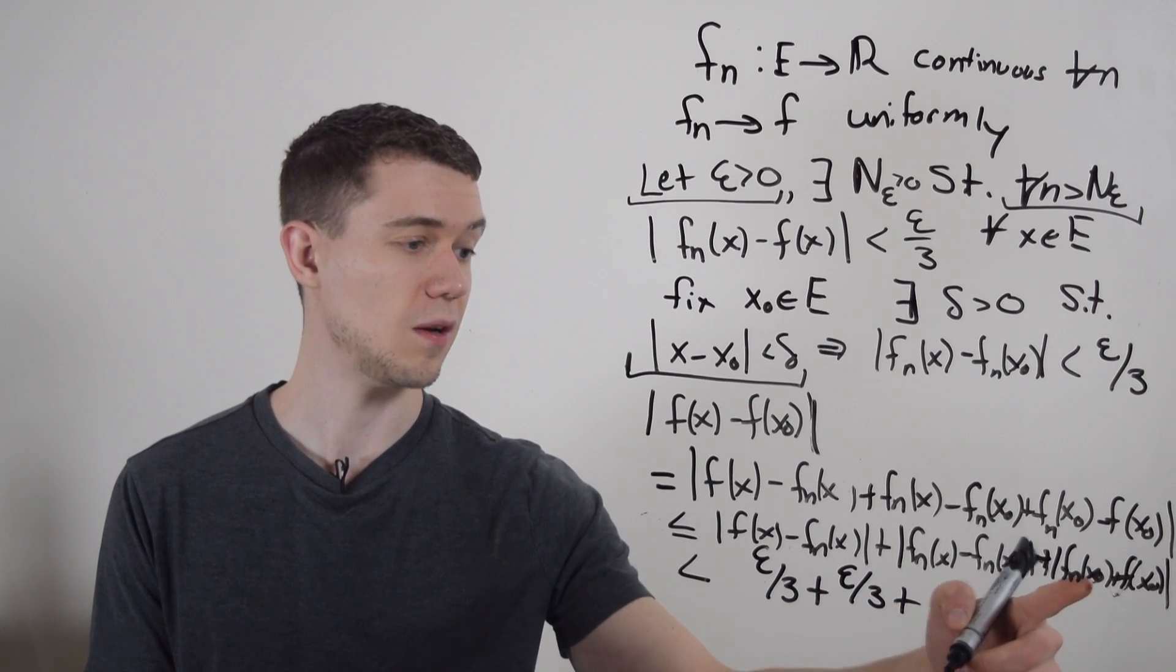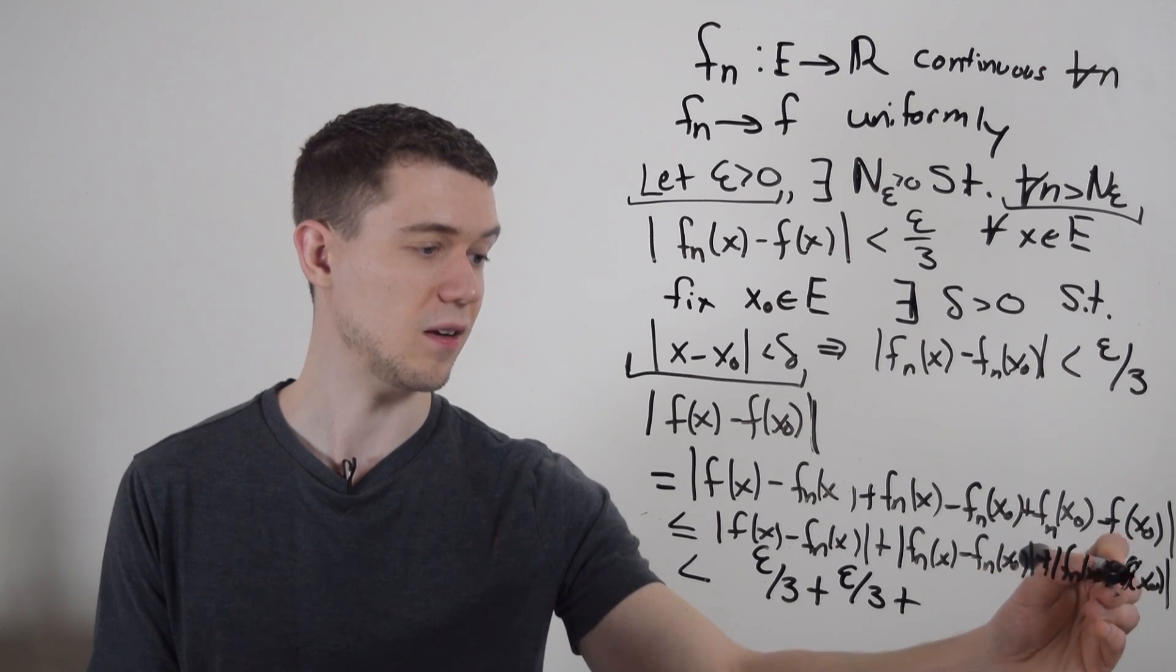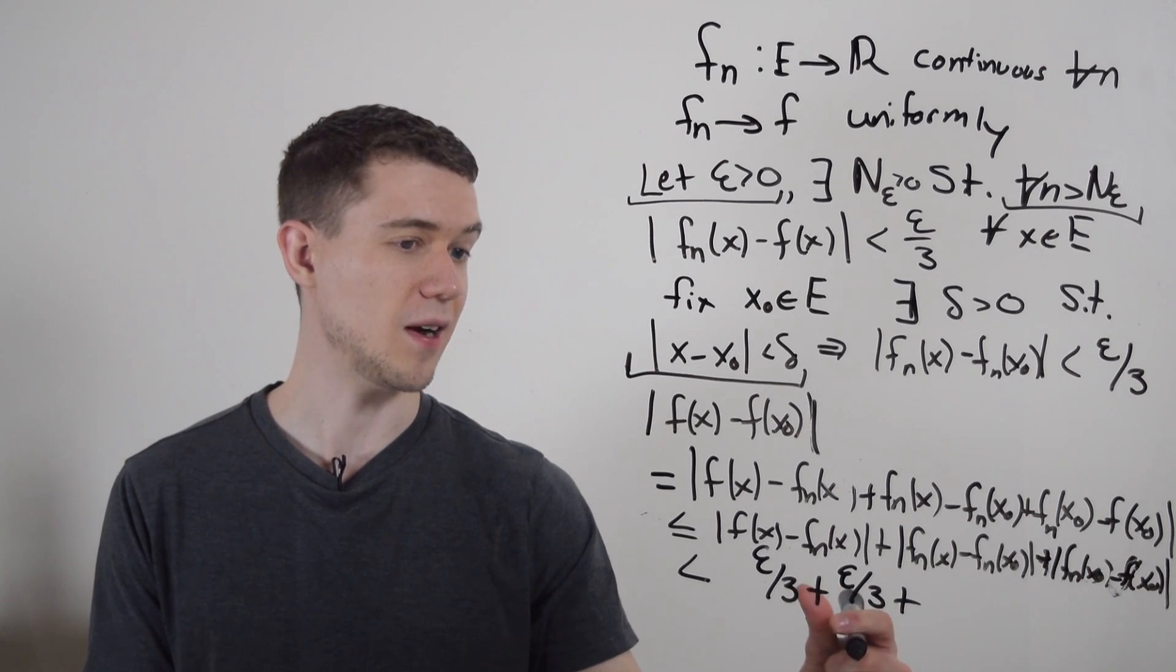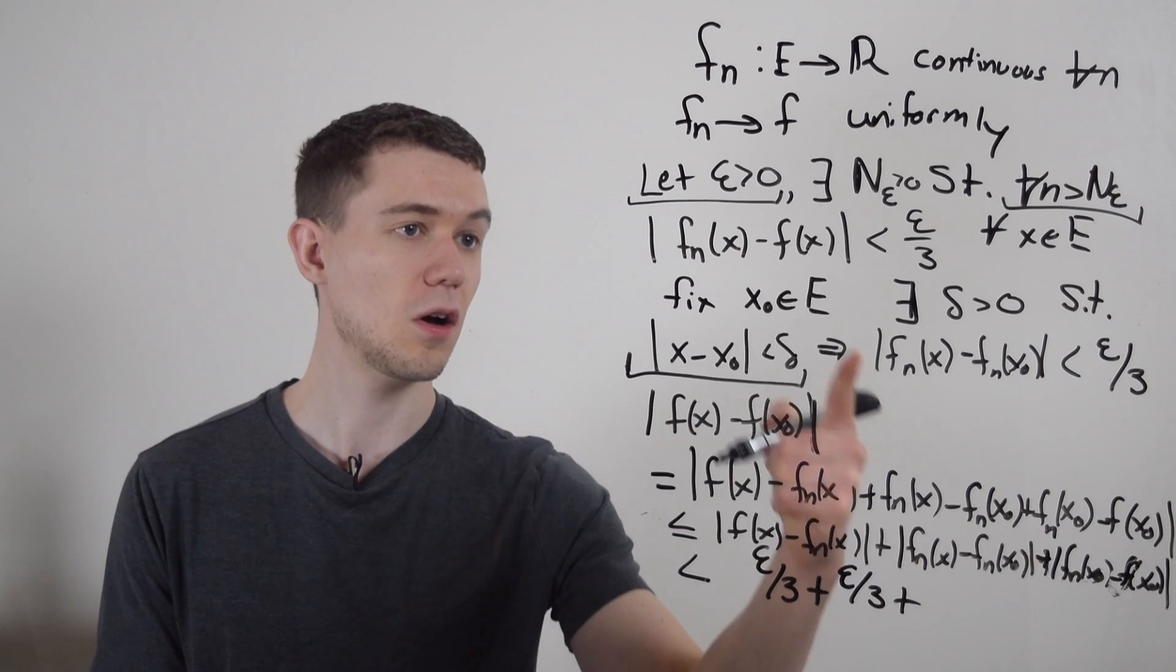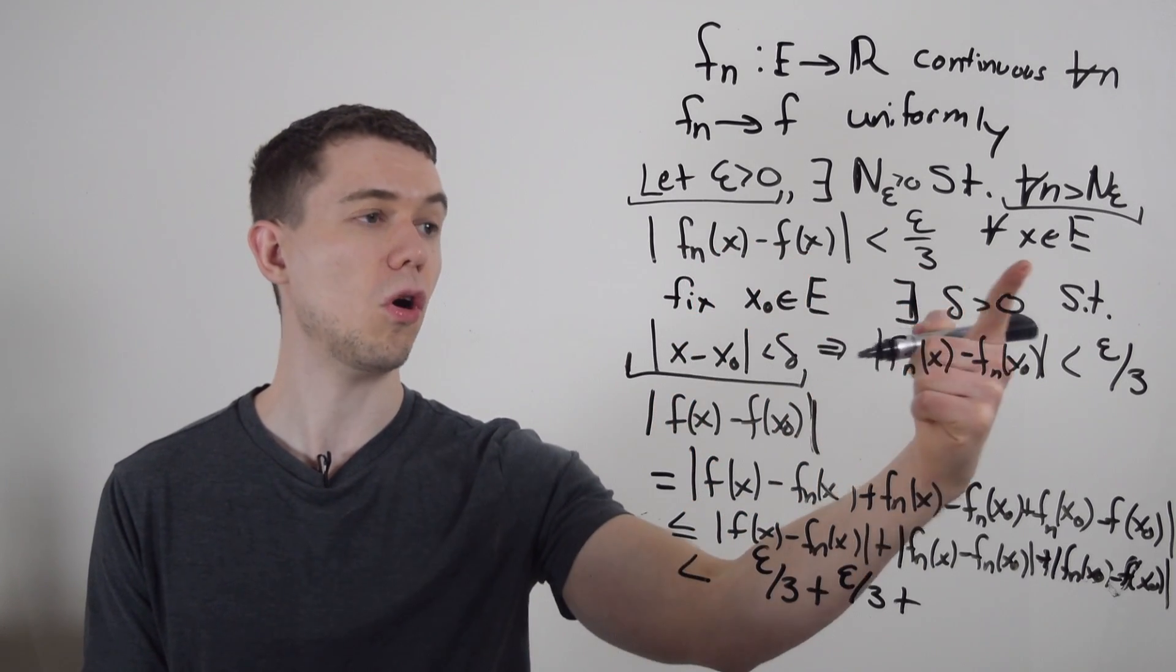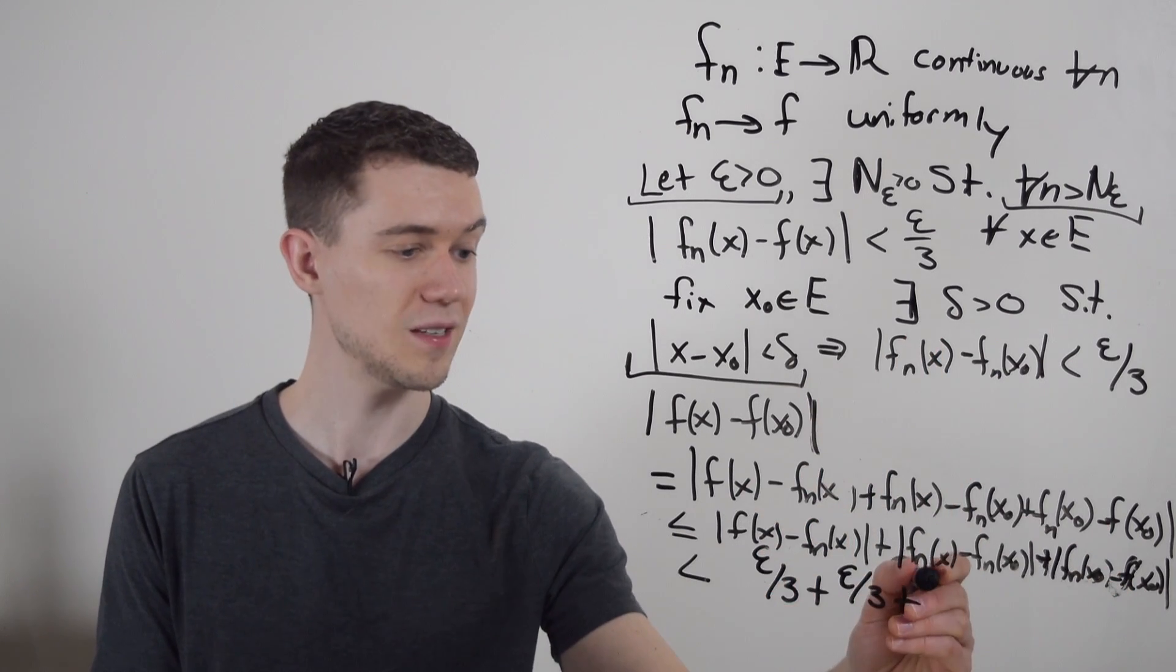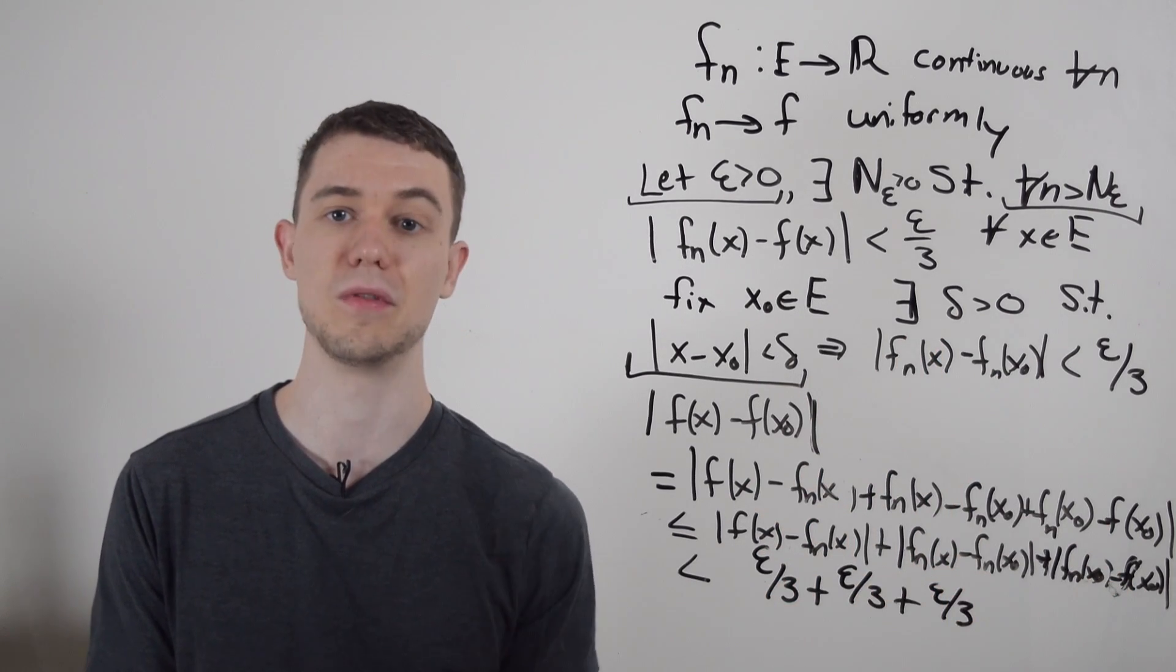And then here, f sub n of x naught minus, if you can see that, f of x naught. That's also by this first fact, since this fact holds true for all x in my domain, x naught is also in my domain. So this is also less than epsilon over three for the same reason.